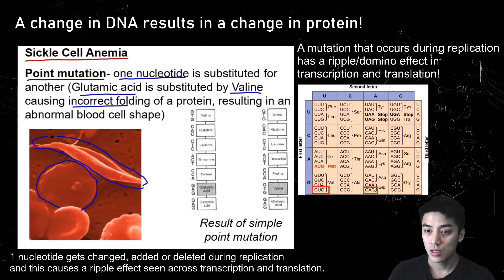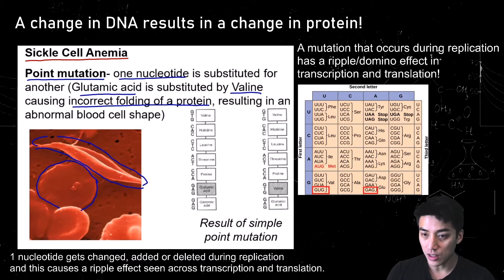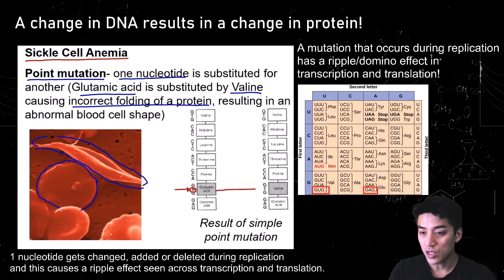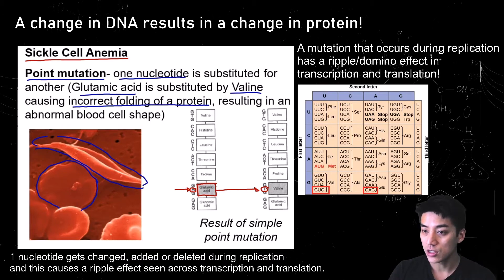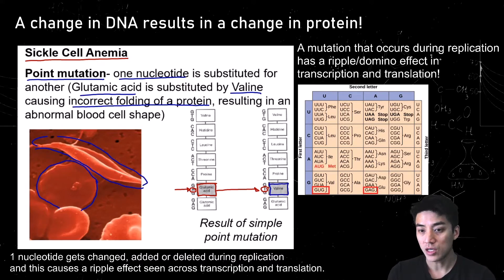Glutamic acid is substituted by valine, and this causes an incorrect folding of a protein which then results in this abnormal blood cell shape. Glutamic acid, according to the codon dictionary, has the sequence GAG. What happens is the A gets substituted and it becomes a T, but remember in mRNA a T is replaced by U. So glutamic acid, which is GAG, becomes GUG, and that becomes valine. One amino acid changed, and now the protein can't fold correctly.